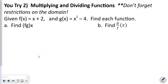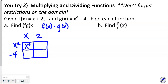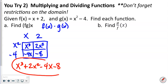You-try: multiply f(x) × g(x) where f(x) = x + 2 and g(x) = x² − 4. Using the box method: x × x² = x³, 2 × x² = 2x², x × (−4) = −4x, 2 × (−4) = −8. There are no like terms to combine, so the answer is x³ + 2x² − 4x − 8.